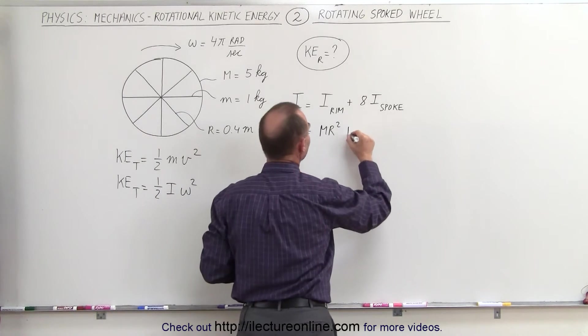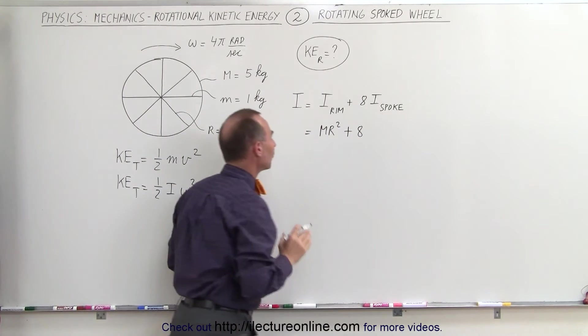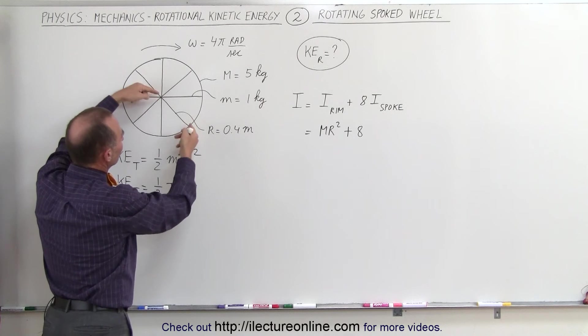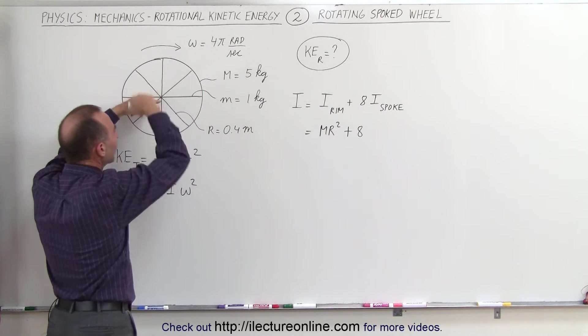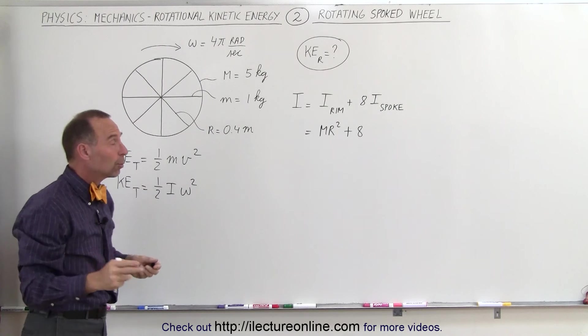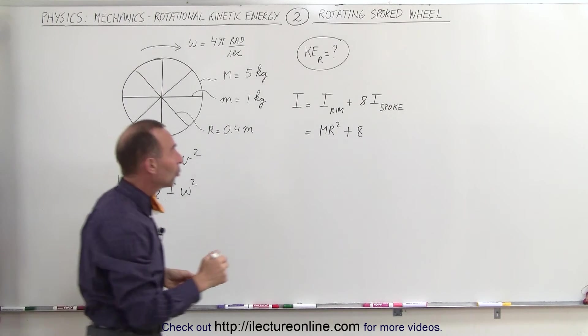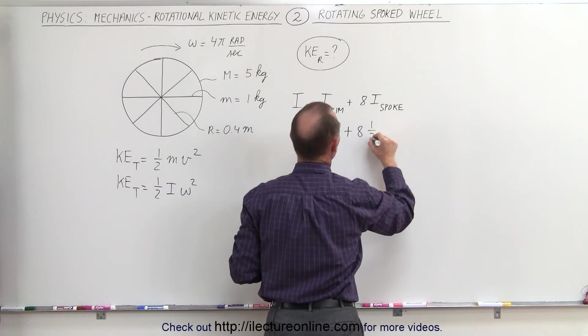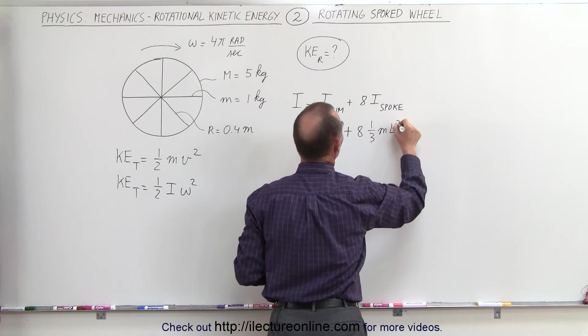plus 8 times the moment of inertia of each spoke, which is basically a beam that's rotating about the edge. The moment of inertia of that would be 1/3 ml², so 1/3 m times l².